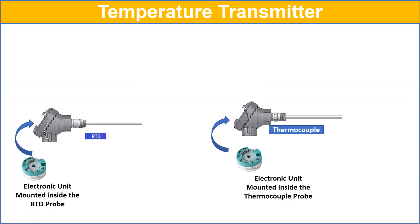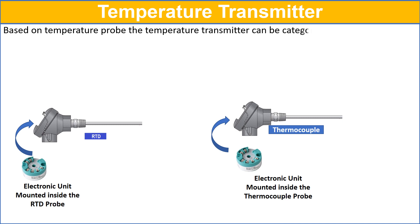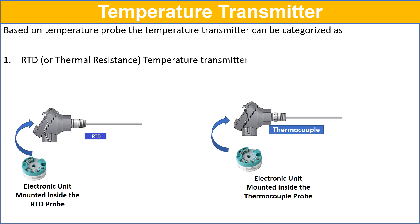The temperature transmitter is generally composed of a temperature probe and a two-wire solid-state electronic unit. Based on the temperature probe, the temperature transmitter can be categorized as RTD or thermal resistance temperature transmitter and thermocouple temperature transmitter.